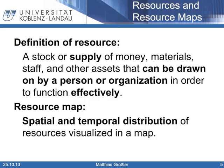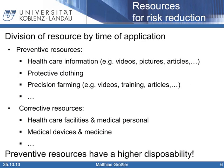First of all, a definition of the term resource. In general, resources are a stock or supply of money, materials, staff and other assets that can be drawn on by a person or organization in order to function effectively. According to risk maps, resource maps are a spatial and temporal distribution of resources visualized in a map. Resources for risk mitigation, in this case for chronic kidney disease, can be divided by the point of time of application into preventive resources and corrective resources.